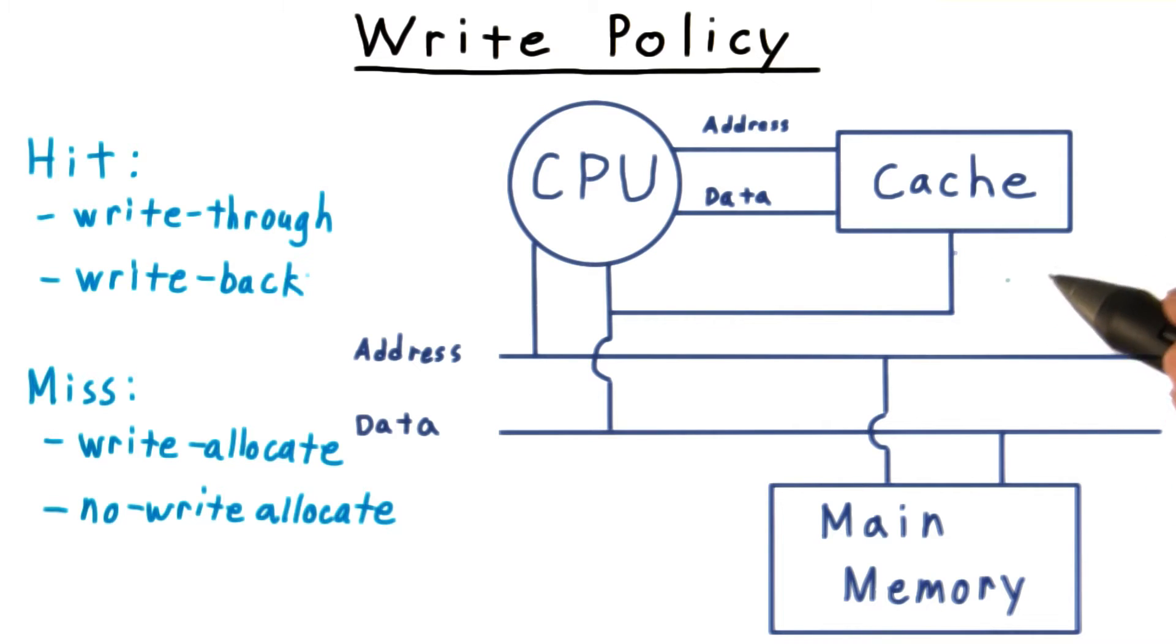Here we'll consider a single core system. I'll refer you to an architecture class for shared memory systems, where keeping the caches consistent becomes a challenge.